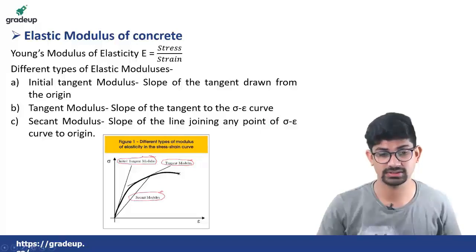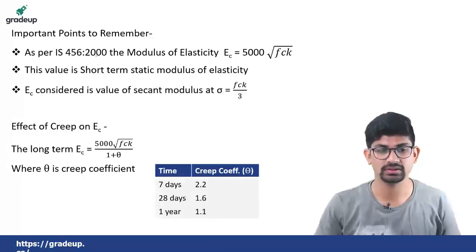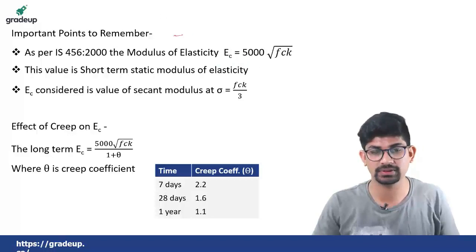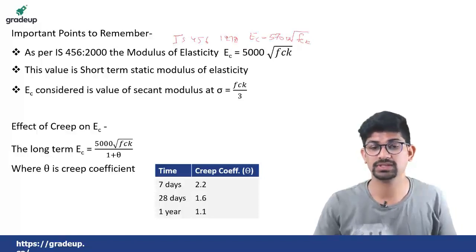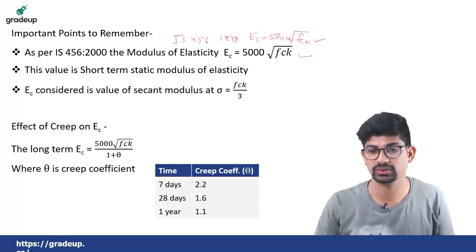These three moduli are defined for concrete. Some important points regarding elastic modulus which often come in examinations: as per IS 456-2000, the elastic modulus EC equals 5000 times the square root of fck. As per IS 456-1978, the elastic modulus was 5700 times the square root of fck. With the amendment in 2000 it was changed to 5000 root fck. In examinations they sometimes give one and sometimes the other to confuse candidates, so please remember both values.